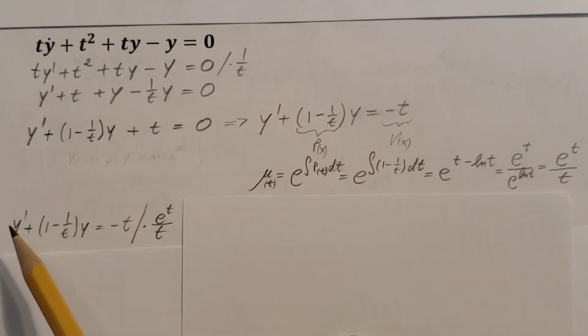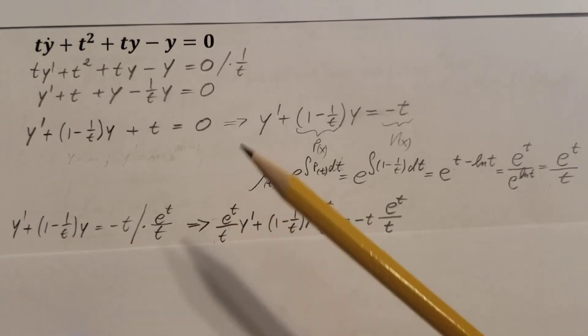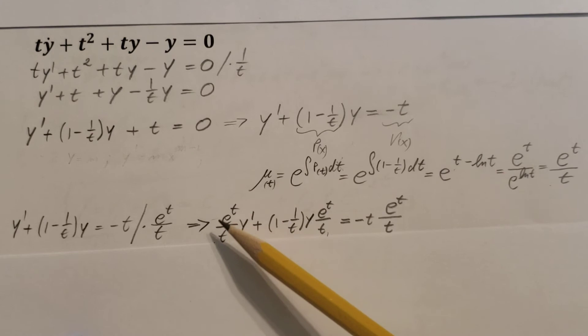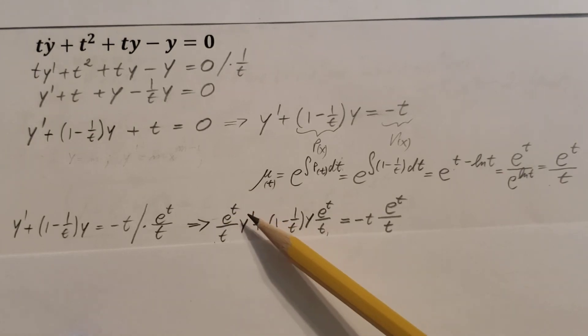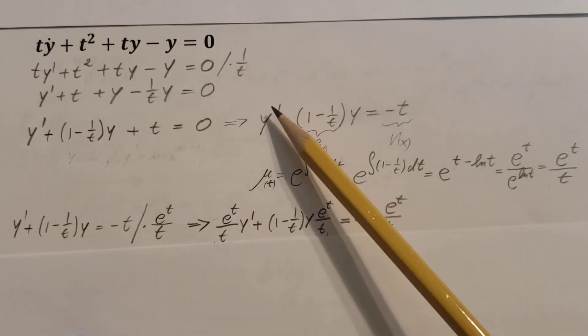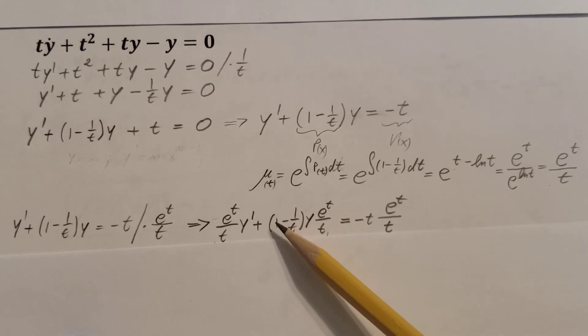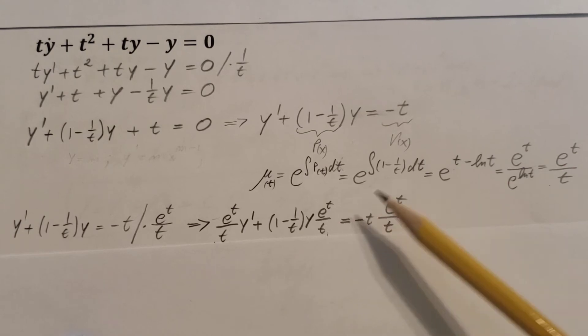So take this times the integrating factor, every single term. And here it is, you can see e to the t divided by t times y prime, just like we have it here. The parentheses times y times e to the t over t, and on the right hand side of the equation, same thing: minus t times the integrating factor.